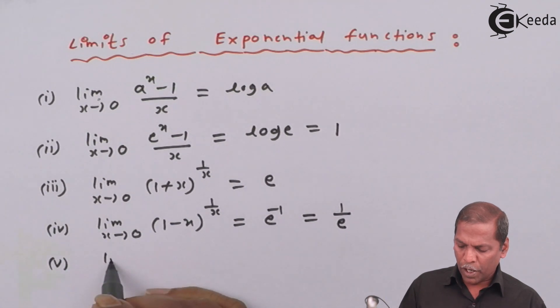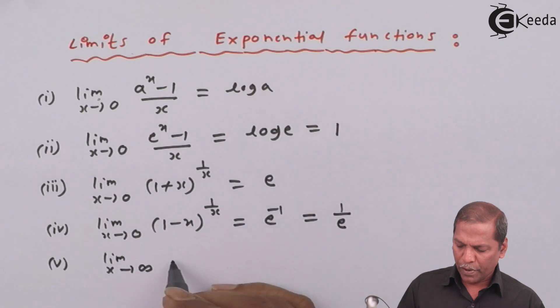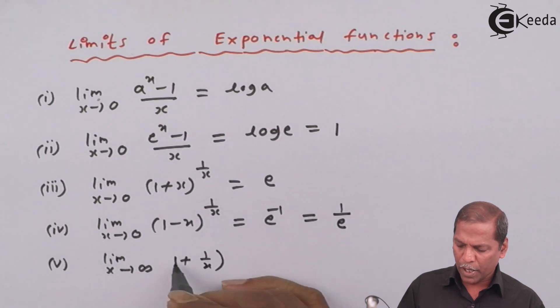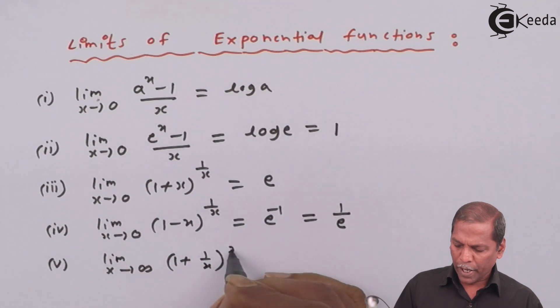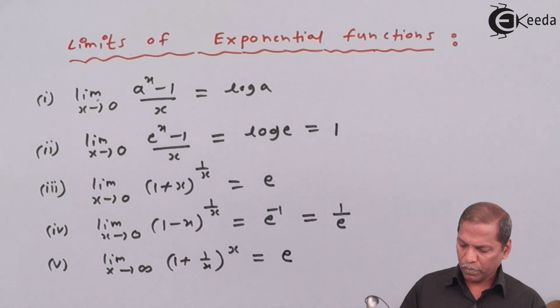Fifth formula is limit x tends to infinity, 1 plus 1 by x in brackets raised to x, is equal to e.